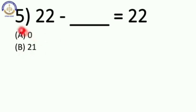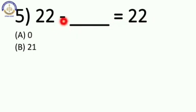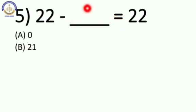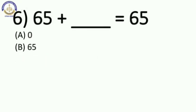Now next: 22 minus blank is equal to 22. Yahan par subtract karna hai. 22 hai aur equal to 22. So we have to subtract 0 — we get the number itself. 22 minus 0 is equal to 22. Our answer is 0. Very good.